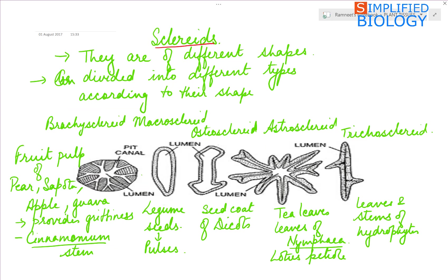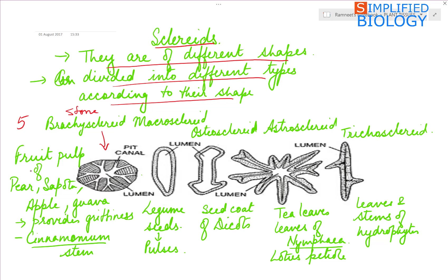Sclerids are of different shapes and divided into five types. First, Brachysclerids, also referred to as stone cells, found in the pulp of fruits like pear, sapota, apple, and guava, providing grittiness or hardness to the fruit; also present in the stem of Cinnamomum (dalchini). Second, Macrosclerids are rod-shaped, found in leguminous seeds, that is pulses.